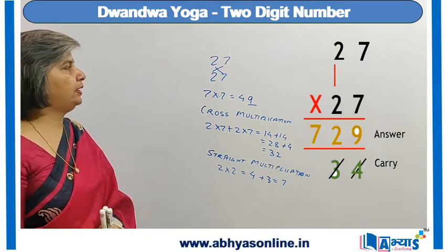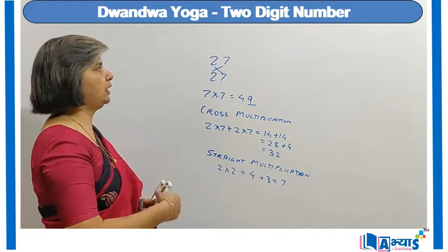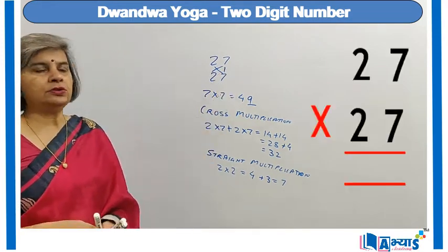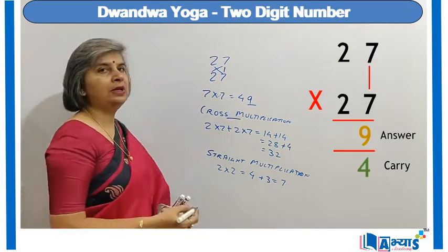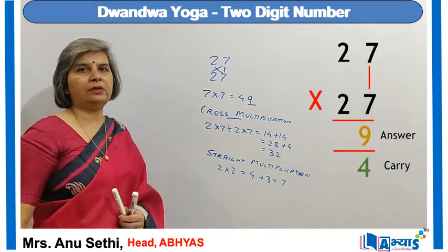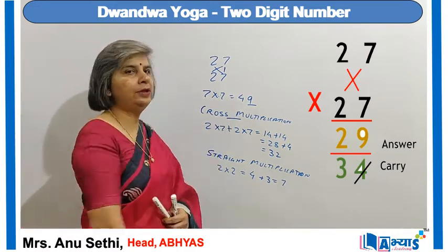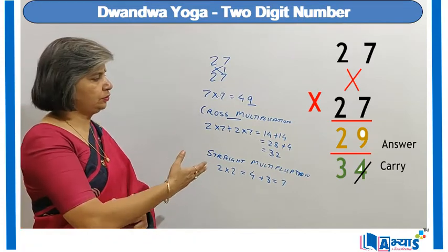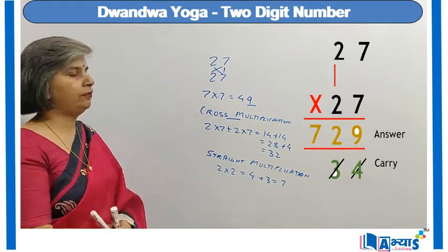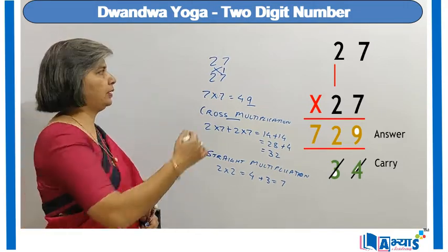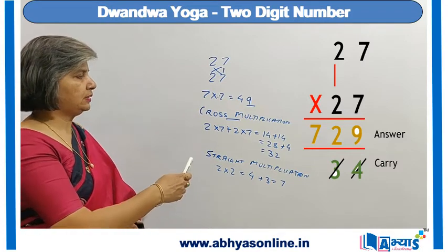To summarize: I found the square of 27 by multiplying 27 with 27 in three steps. Step 1 — straight multiplication: 7×7=49, so 9 goes in the answer and 4 is the carry. Step 2 — cross multiplication: 2×7 + 2×7 = 28, plus carry 4 = 32; 2 goes in the answer and carry becomes 3. Step 3 — straight multiplication: 2×2=4, plus carry 3 = 7; 7 is placed in the answer, giving the final result 729.